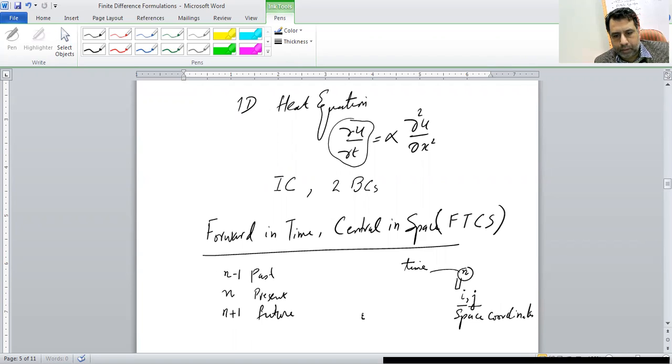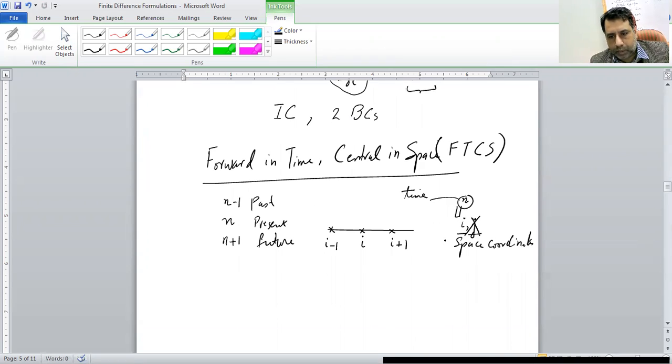Similarly, if this is a location I, if we move forward, we will be having I plus 1. If we move backward, we will be having I minus 1. At the moment, we have one dimensional problem in space coordinate. So we don't need this second index J. But if you have a two dimensional parabolic equation or two dimensional heat problem, then of course you need this second index. So at the moment, life is simple.